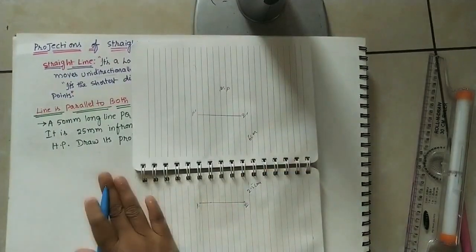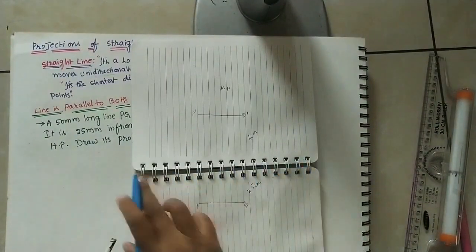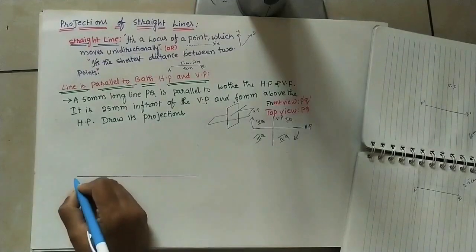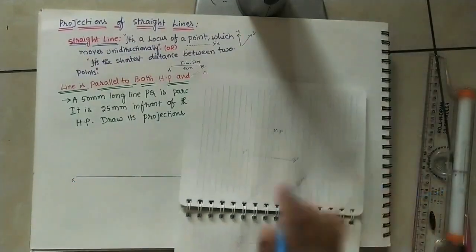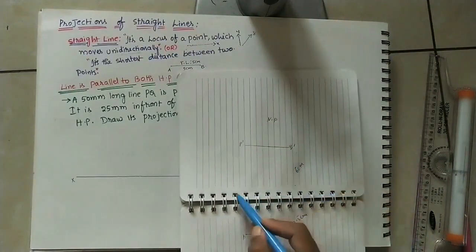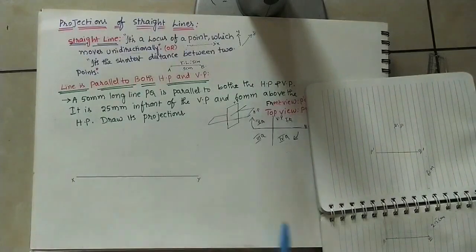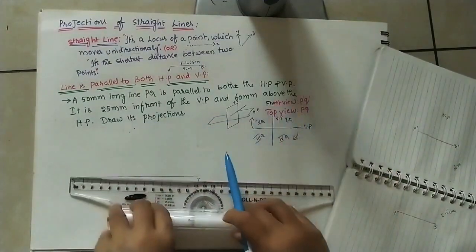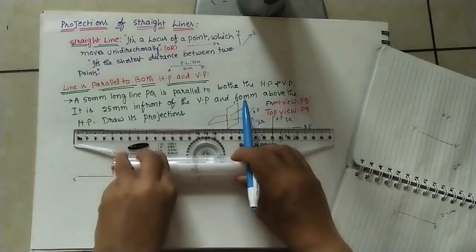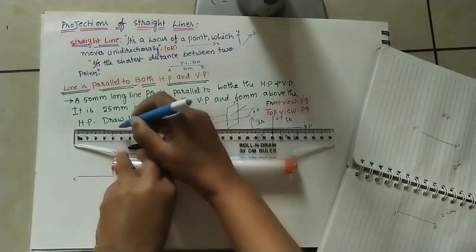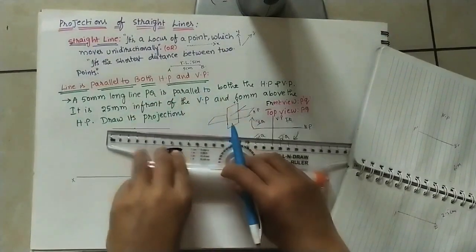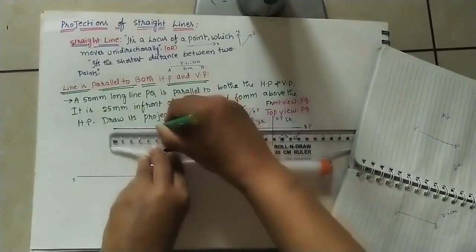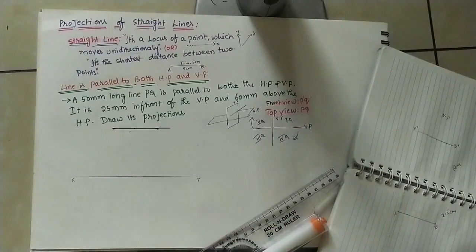Now we draw these projections on the sheet. First, draw the XY line at the middle — it joins the vertical plane and horizontal plane. Take any convenient length, say 10–12 cm. Then draw line p'q', which is 6 cm from the XY line. From the XY line, mark 6 cm, then draw a 5 cm line parallel to XY and label it p'q'.